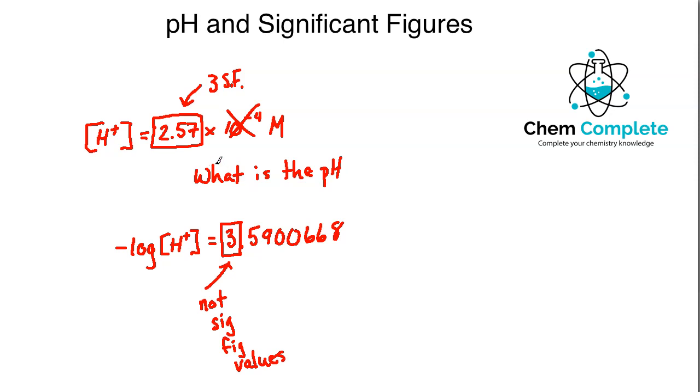And so what ends up happening when you convert this is the number of significant figures that went into the molarity are the number of decimal places that need to come out of the pH. So because there were three significant figures in this value, that means this pH should be taken out three decimal places, which means I would nix the rest of this. And so the correct value for this would be that the pH is going to equal 3.590.